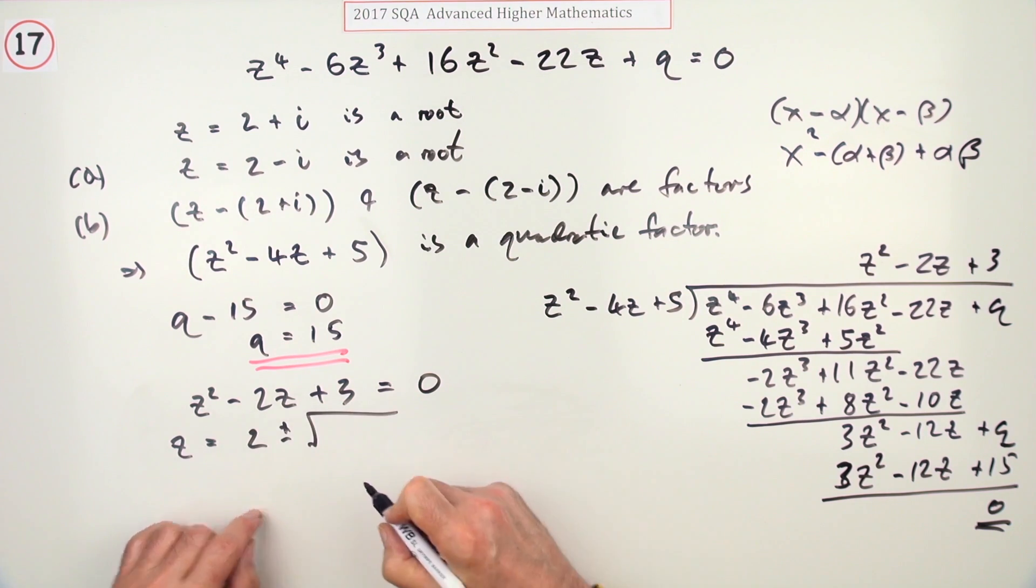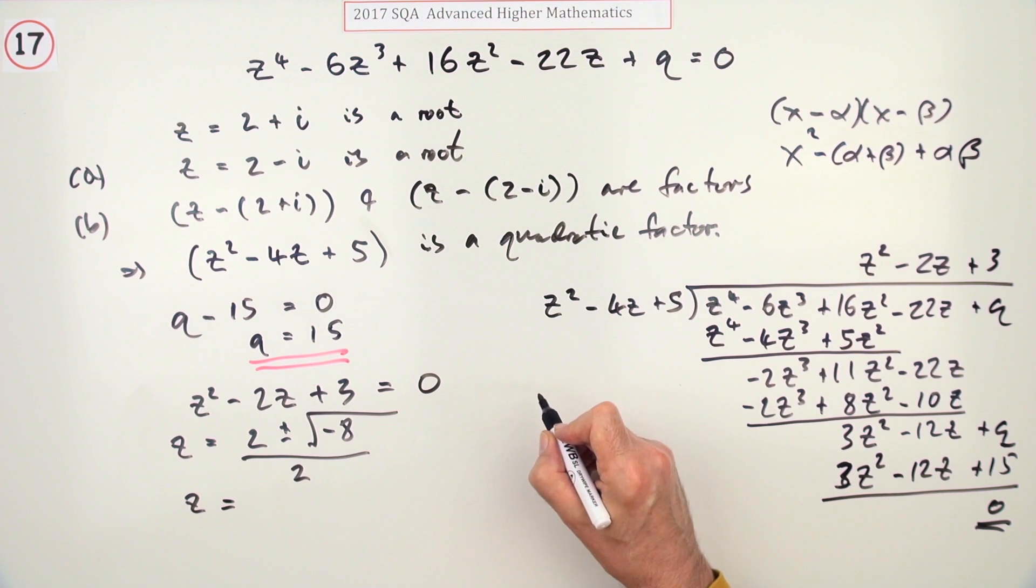z = -b ± √(4 - 12) over 2, which is ±√(-8) over 2. The square root of 8 is 2√2, so it's 2/2 = 1, and 2√2/2 = √2.